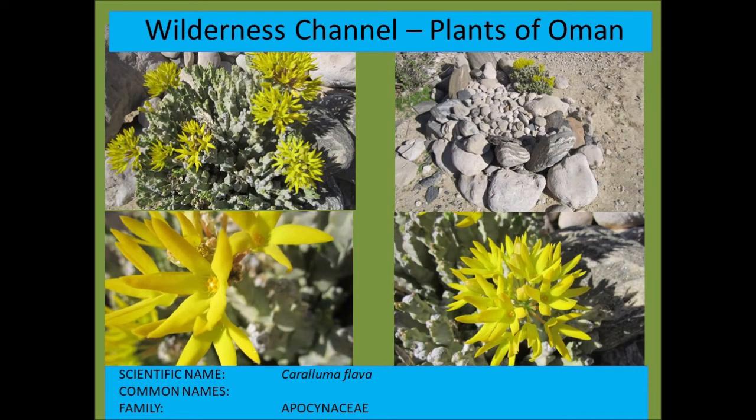Caralluma flava of the Apocynaceae — the oleander family. This particular specimen was photographed right at a grave site; you can see the rocks in the top right photograph. It was a grave site in Dhofar of Jebali tribesmen — very old grave sites, some several hundred years old.